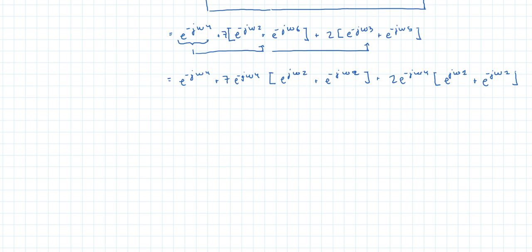Alright, so you might recall that the cosine of x is equal to e to the j x plus e to the minus j x over 2. And if we apply this identity, then we're going to get,